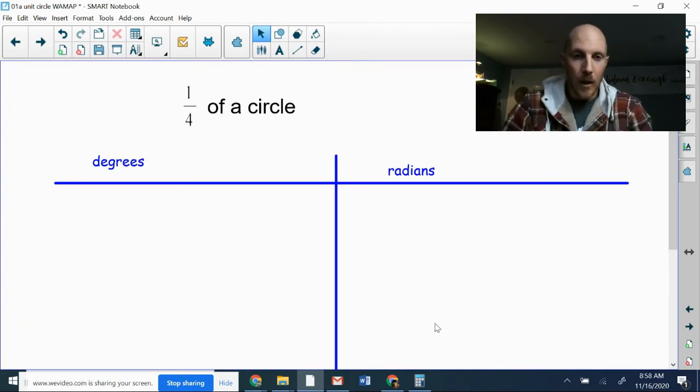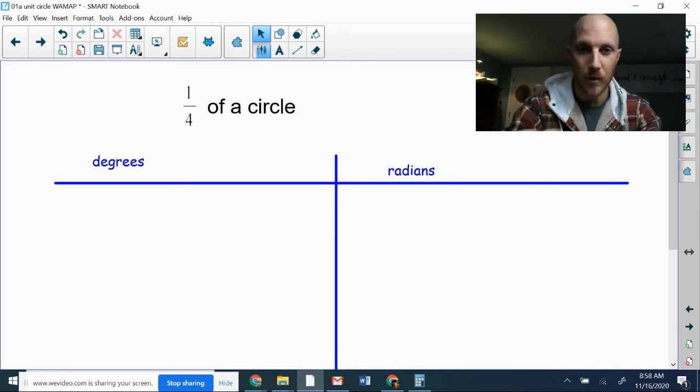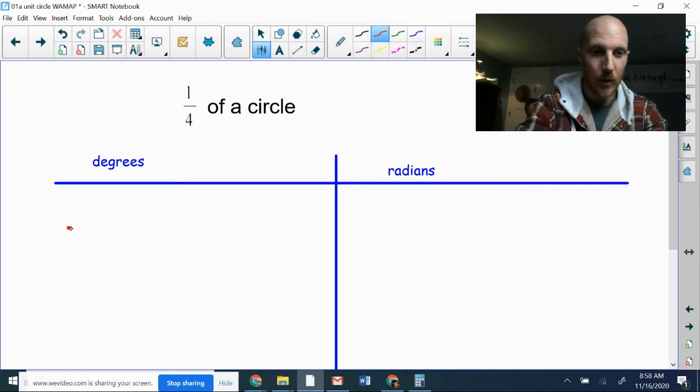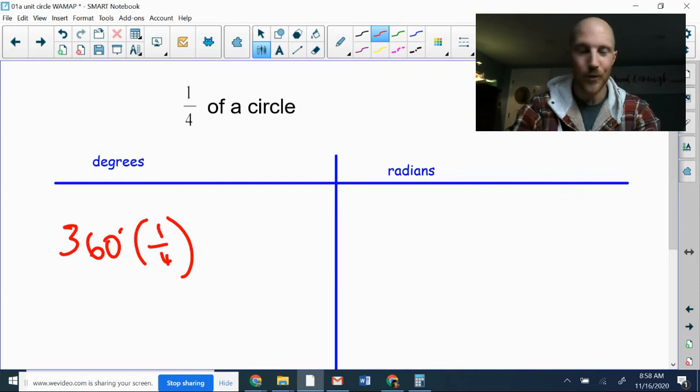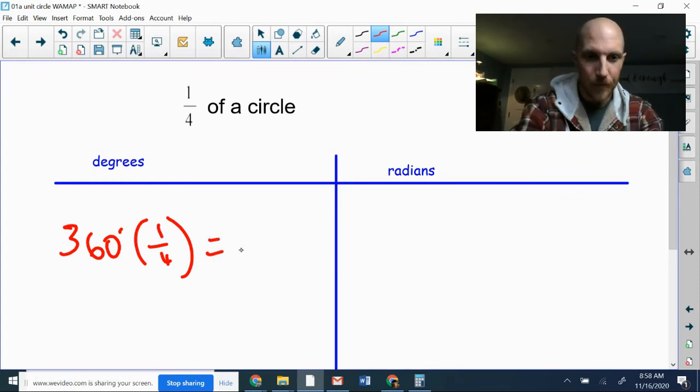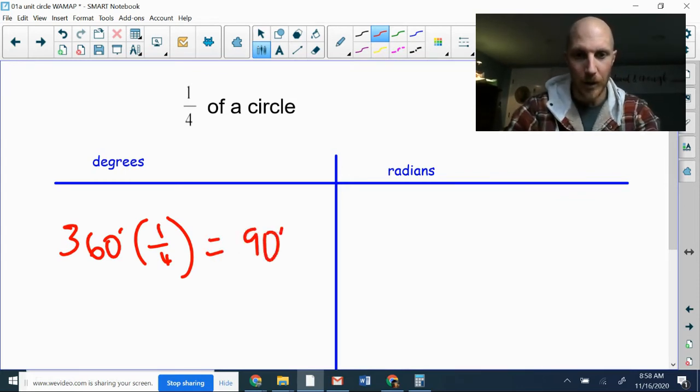Okay, lastly, let's take a look at the same idea here using both degrees and radians. If I want to know what is the measurement of the angle that would correspond with one fourth of a circle in degrees, I know that the whole circle is 360 degrees. And so if I want one fourth of that, I can multiply by one fourth. I can divide it by four. That's going to give me 90 degrees.